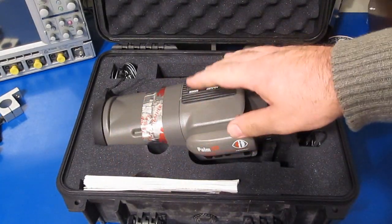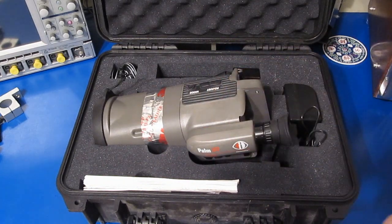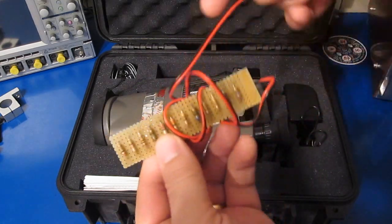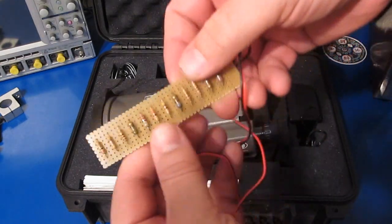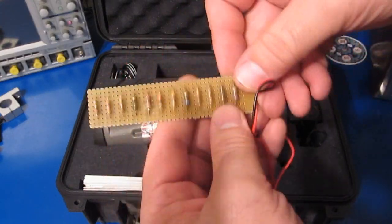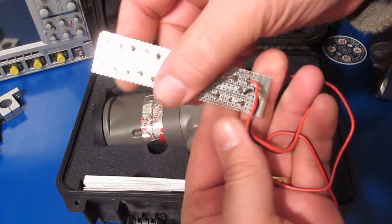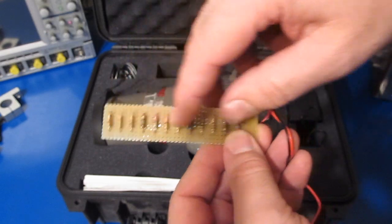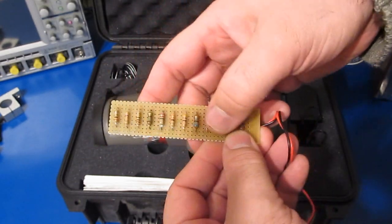So I thought what we could do is try to write some software for this camera that would post-process the data and then see if we can actually read temperature with it. You can see here I have a small piece of perf board, and then I have a whole bunch of different valued series resistors. These will all dissipate different amounts of power and have a different temperature.